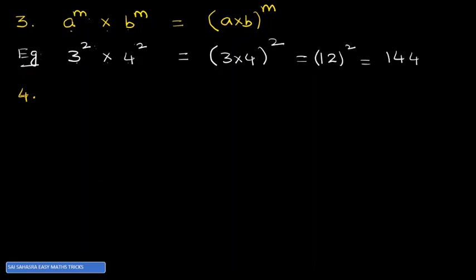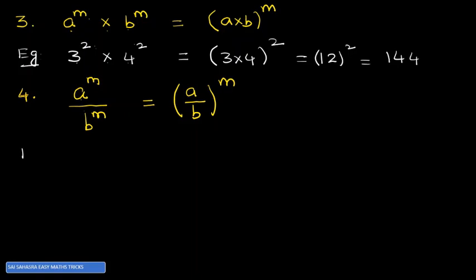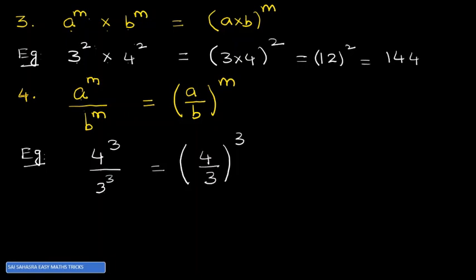Law number 4: a raised to the power of m divided by b raised to the power of m. We take the common exponent m for both a and b, and write a by b as it is, giving (a/b)^m. Example: 4 raised to the power of 3 divided by 3 raised to the power of 3. The common exponent is 3, and we write 4 divided by 3, giving (4/3) raised to the power of 3.